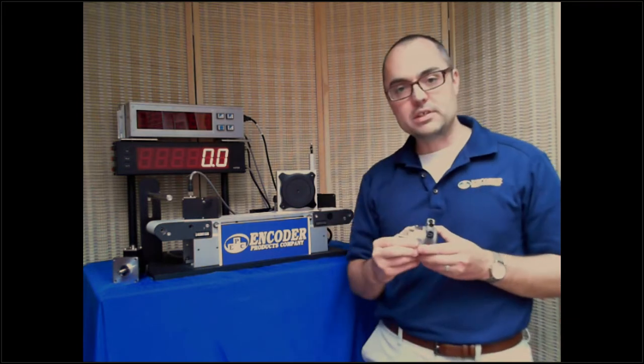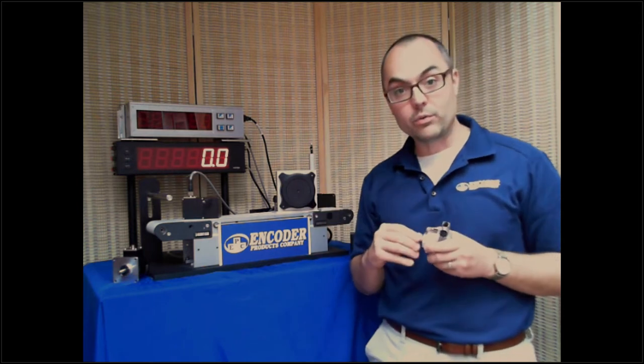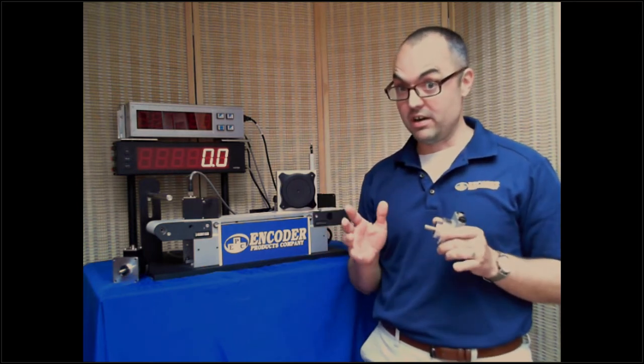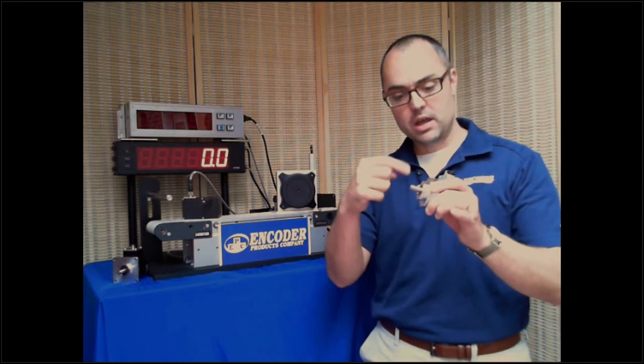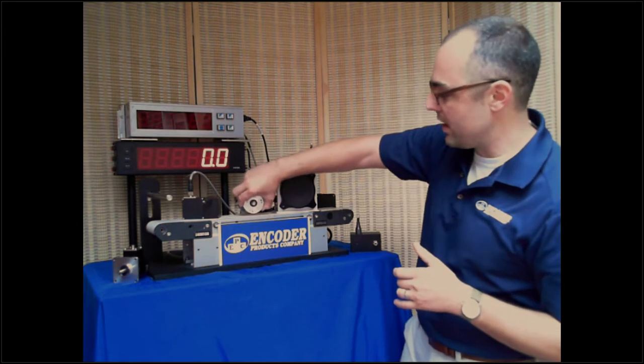So what happens if we take this encoder and we put a drum on it, kind of like a drum on the winch of a Jeep, except much more precise, a very precision machine drum, and put a steel cable on it with a spring. That makes it a draw wire encoder.